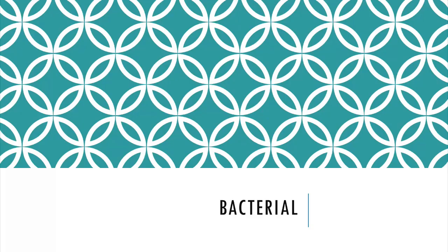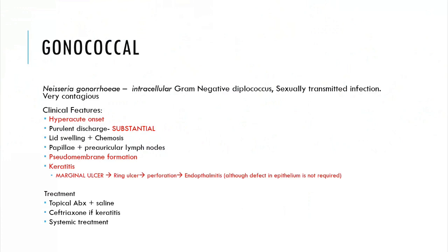Starting with bacterial gonococcal conjunctivitis, this is caused by Neisseria gonorrhoeae, which is an intracellular gram-negative diplococcus. It's a really contagious sexually transmitted infection. The clinical features are very similar to that of normal bacterial conjunctivitis with papillae, lid swelling, chemosis — which is conjunctival oedema — and mucopurulent discharge. However, what differentiates it is that it has a hyperacute onset with substantial discharge, and the eyelids may become closed shut due to the drying of the discharge.